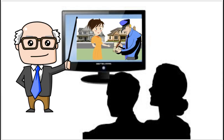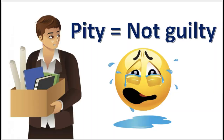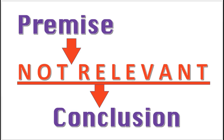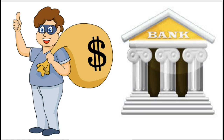Notice how the argument is fallacious. The conclusion is that Frank is not guilty of bank robbery. The premise is that Frank is deserving of pity. The premise is logically irrelevant to the conclusion, because subjective feelings are not relevant to something that is objectively true about a person or what they did.